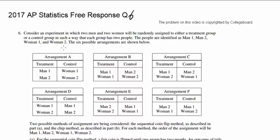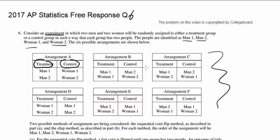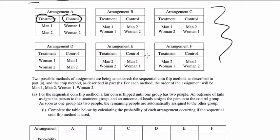Let's see how 2017 question number 6 went down. Consider an experiment in which two men and two women will be randomly assigned to either a treatment or control group, in such a way each group has two people. The people are identified as man 1, man 2, woman 1, and woman 2. And the six possible arrangements they have nicely given to us below.